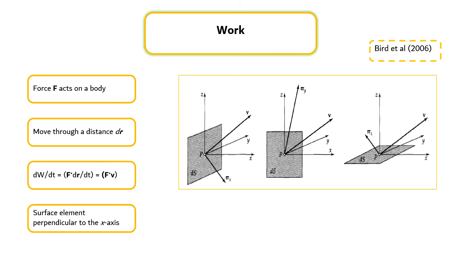Let's consider the surface element perpendicular to the x-axis. The fluid on the minus side of the surface exerts a force pi x ds on the fluid that is on the plus side. Since the fluid is moving with the velocity v, the rate at which work is done by the minus fluid on the plus side is pi x v ds.